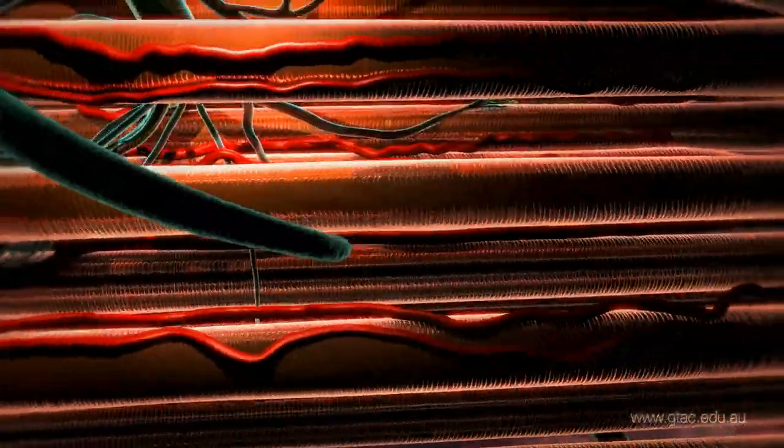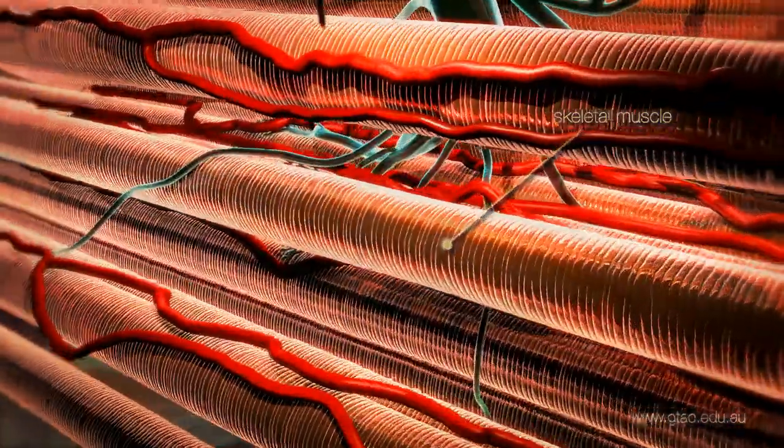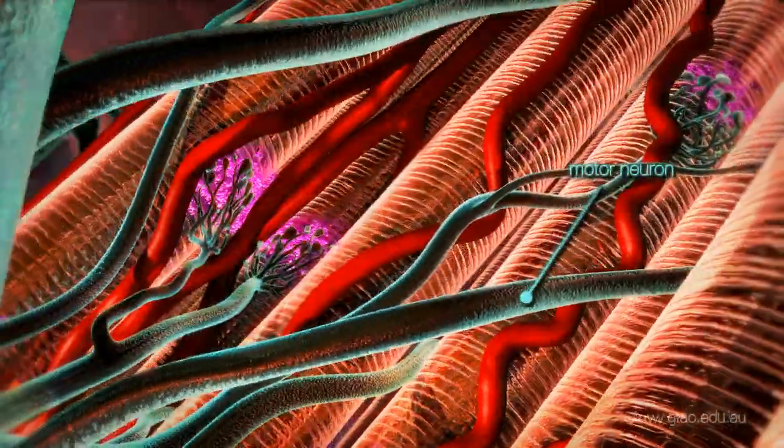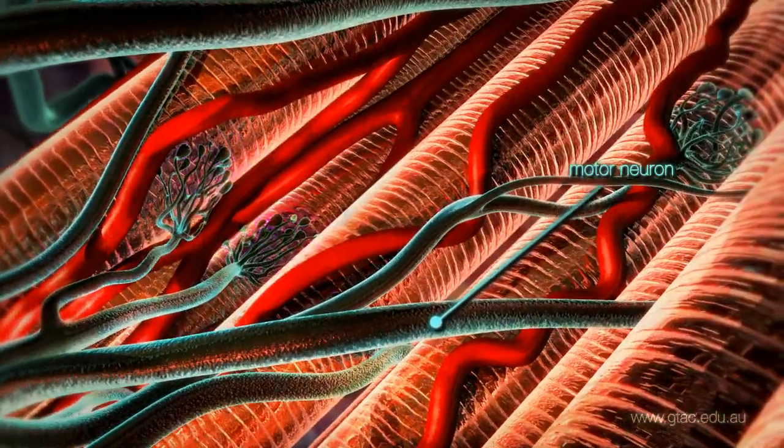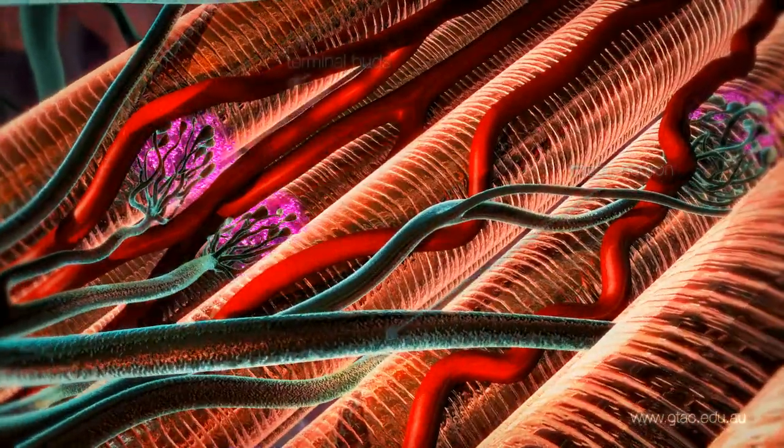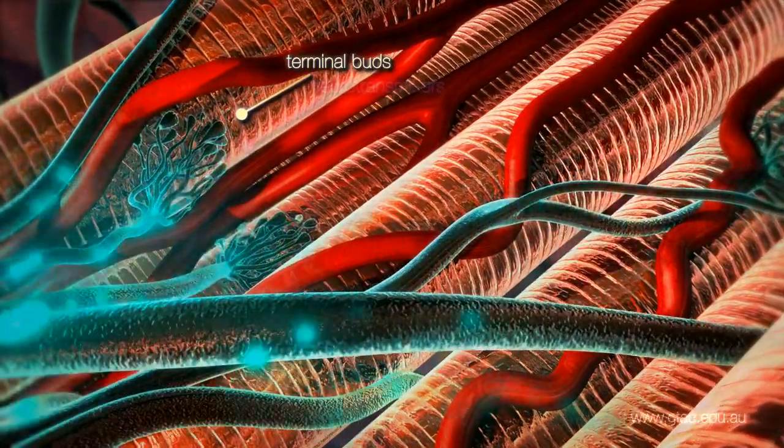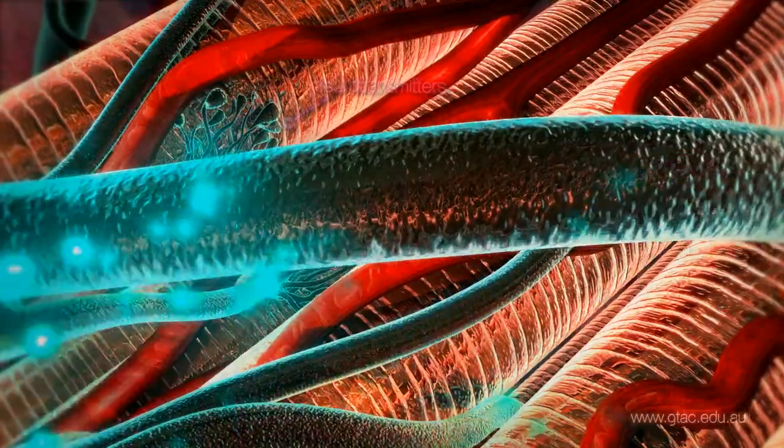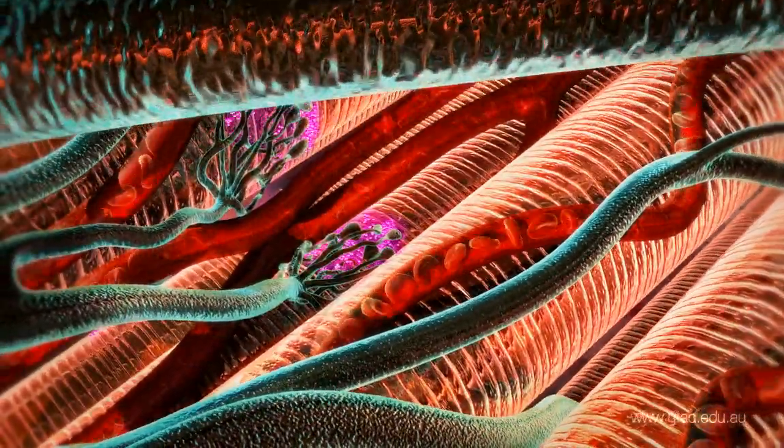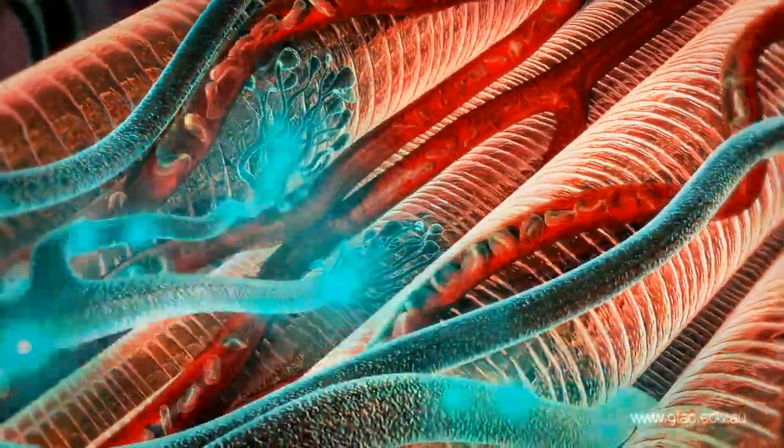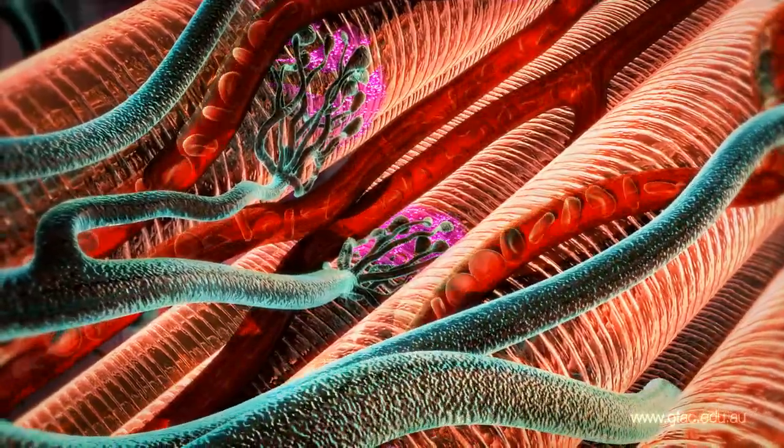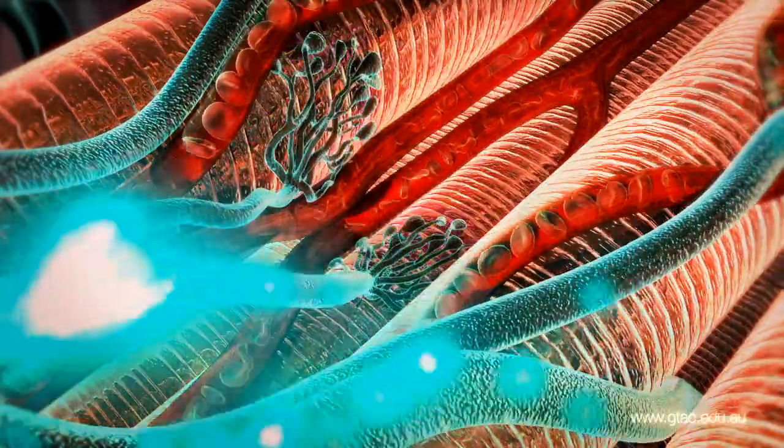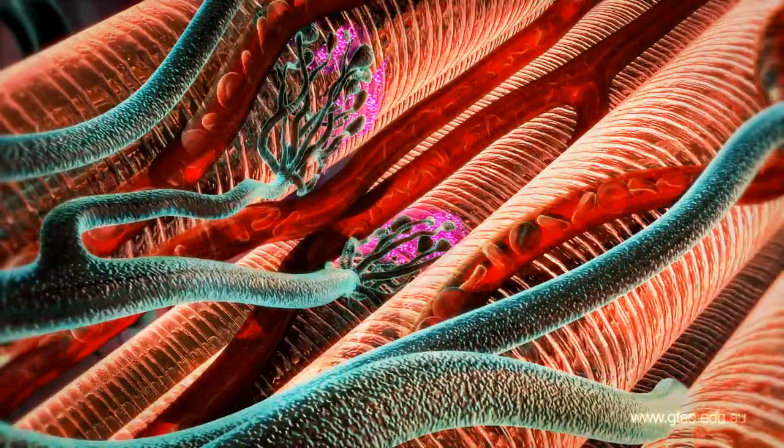Movement is enabled by skeletal muscles and skeletal muscles are controlled by motor neurons. An electrical message is sent down the axon of a motor neuron and arrives at the terminal buds. Chemical neurotransmitters are released which bind to the muscle fibers causing them to contract. Shortly after, the neurotransmitters are released from the muscle fibers allowing them to relax. Repetition of this process tells the muscle fibers to contract and relax as required.